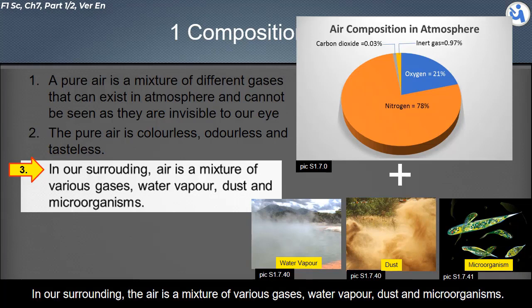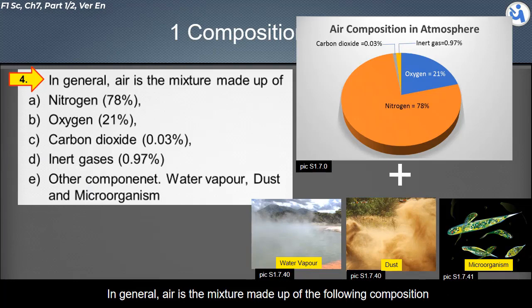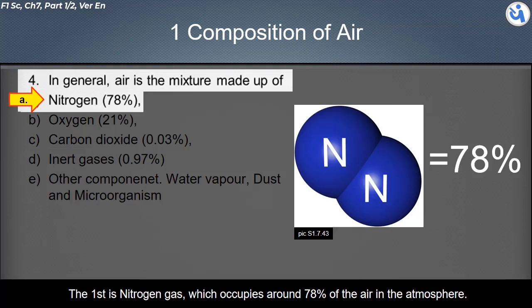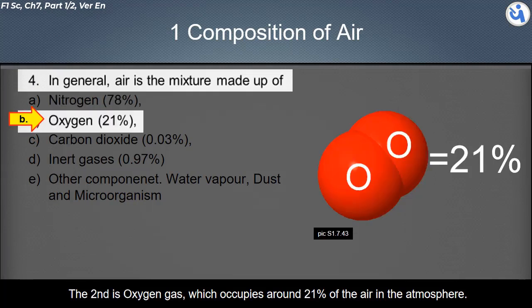In our surroundings, air is a mixture of various gases, water vapor, dust, and microorganisms. In general, air is made up of the following composition: the first is nitrogen gas, which occupies around 78% of the air in the atmosphere. The second is oxygen gas, which occupies around 21% of the air in the atmosphere.